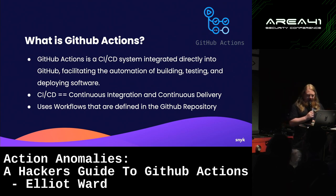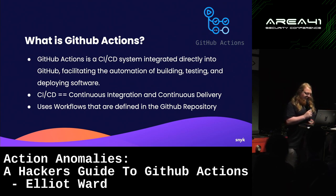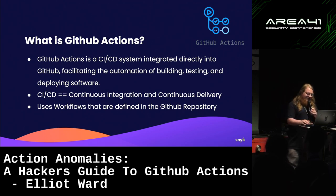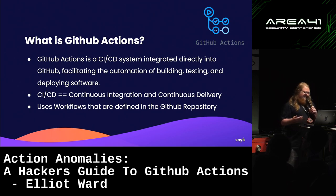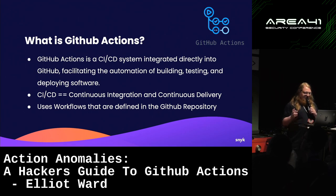GitHub Actions is a CI/CD system integrated directly into GitHub that facilitates tasks associated with the software lifecycle such as building, testing, and deploying software. CI/CD stands for continuous integration and continuous delivery. The workflows themselves are defined within your GitHub repository.